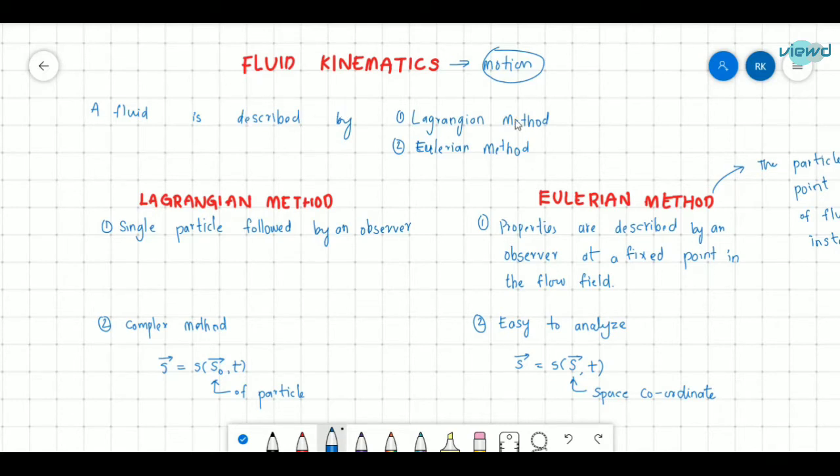And this does not consider the mass of the fluid and the force of the fluid. We do not consider these in kinematics. We consider that in fluid dynamics. So a fluid flow is described by Lagrangian method and Eulerian method. What are these methods? Let us see now and differentiate these both methods.